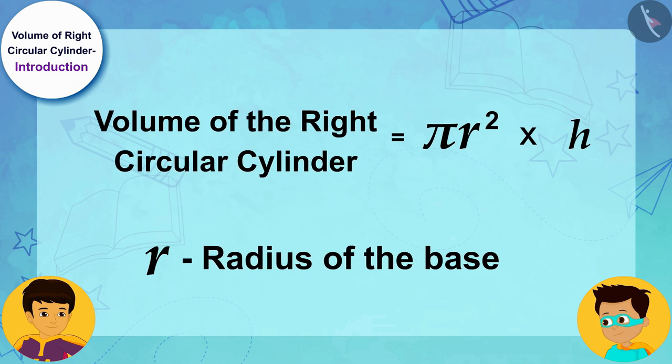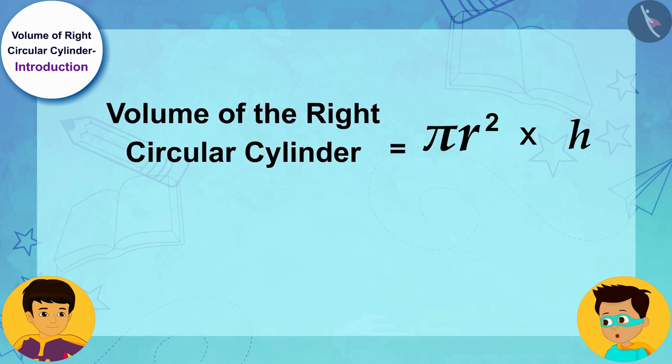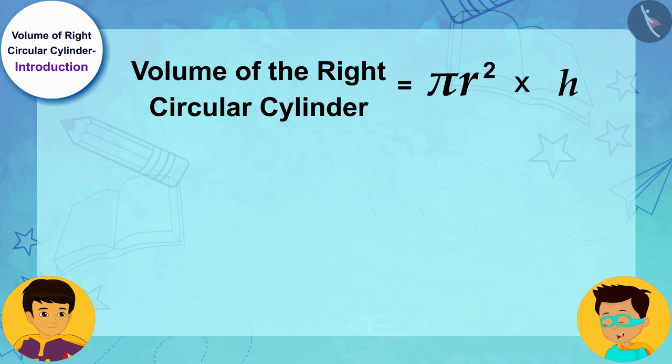Oh wow, Manas! We found the formula for the volume of a right circular cylinder. Now I will solve this by writing the radius of the base of the candle, 3 cm, in place of r, and the height of the candle, 14 cm, in place of h.